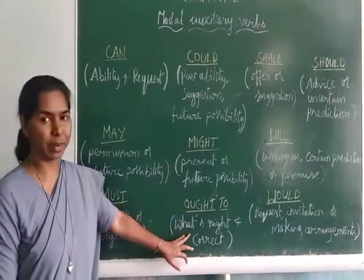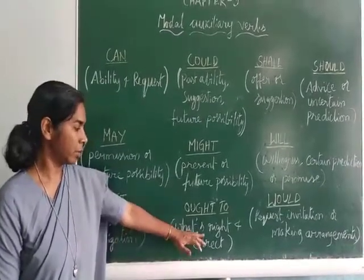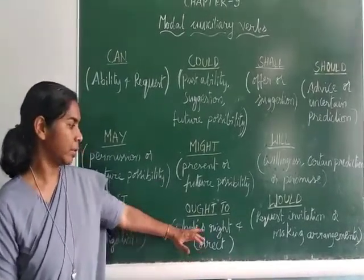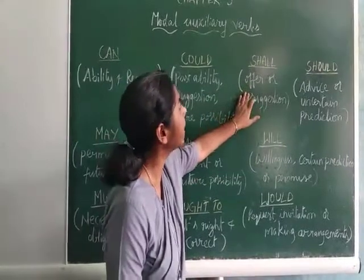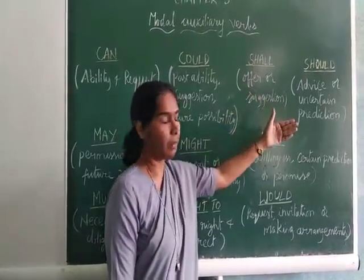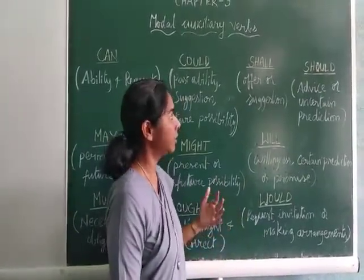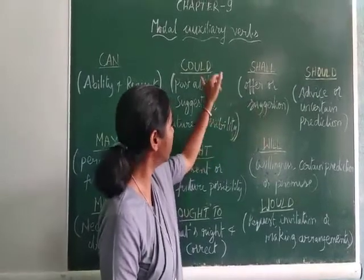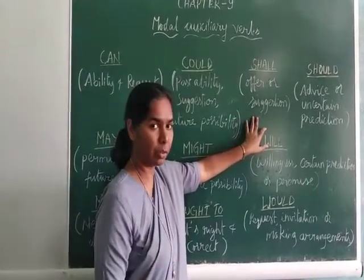Ought to is used to express what is right and correct. There is no excuse for it — no partial right or partial correctness — it is complete. To express something that is right and correct, we use 'ought to'. Next is 'shall'. Shall is used to express an offer or suggestion. An offer is something I give to the other — for example, 'I shall give you some money.' So shall is used for offering something to the other person, and also for making suggestions.